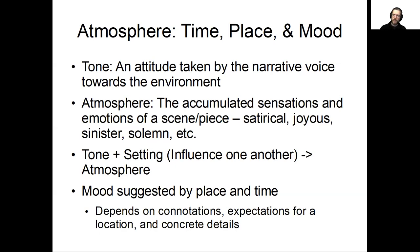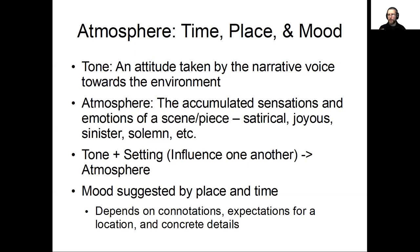Mood is suggested by place and time. As in earlier examples, mood is often defined by connotations and expectations for a particular location as well as concrete specific details. When we hear the word 'mansion,' we automatically associate it with certain connotations — we think about wealth and opulence, perhaps greed. Those associations inform our response to and mood regarding that piece. It draws on our expectations for a given location and the feelings that characters should expect to have, but it also relies on the specific language being used to describe the setting.